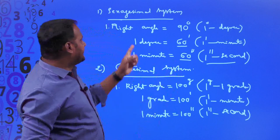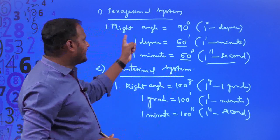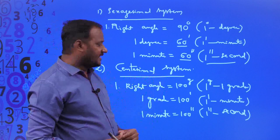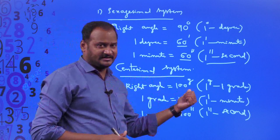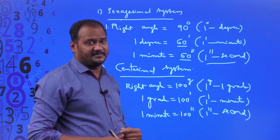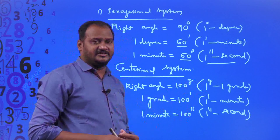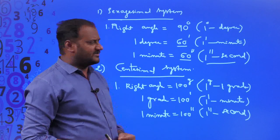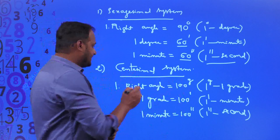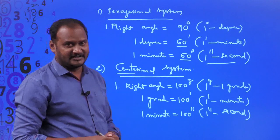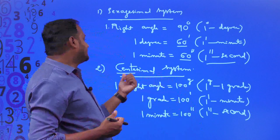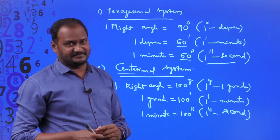What is the similarity between these two systems? In both, after the main unit — degrees or grades — they are further divided into minutes and seconds. The difference is: the sexagesimal system divides one right angle into 90 equal parts (degrees), while the centesimal system divides it into 100 equal parts (grades). In sexagesimal, divisions are by 60; in centesimal, all divisions are by 100. That is why it is called the centesimal system.